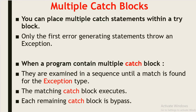You can place multiple catch block statements within a single try block. Only the first error-generating statement throws an exception. When a program contains multiple catch blocks, they are examined in sequence until a match is found for the exception type. Only the matching catch block executes — the other catch blocks will not execute. Let us see in the code how this works.